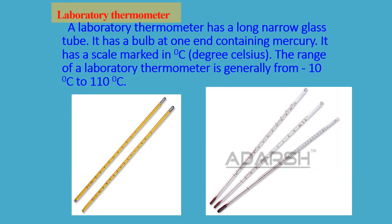How is a laboratory thermometer different? A laboratory thermometer has a narrow long glass tube with a bulb at one end containing mercury. It has a scale marked in degree Celsius. The range of a laboratory thermometer is generally from minus 10 degree Celsius to 110 degree Celsius.